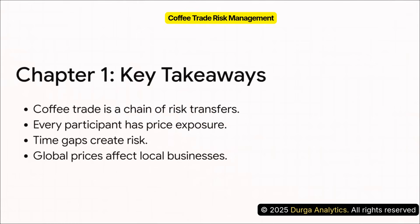To summarize what we've covered, the key takeaways from this chapter are: first, the coffee trade is fundamentally a chain of risk transfers; second, every single participant has some form of price exposure; third, those time gaps between buying and selling create the risk; and finally, global prices affect everyone, whether you're large or small.